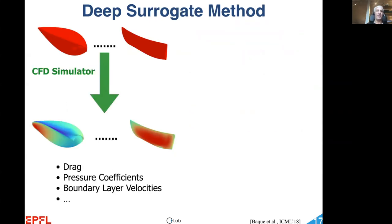One way to address this difficulty is to use what's known as a surrogate method. One runs a number of simulations on a training database of shapes, such as those shown here.